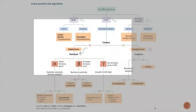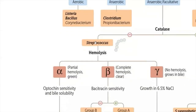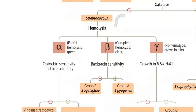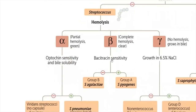To summarize: for a catalase-negative gram-positive coccus, examine the hemolysis. For beta-hemolytic organisms, consider Group A and Group B. To differentiate them, you can do bacitracin susceptibility, PYR test, CAMP test, and hippurate hydrolysis.